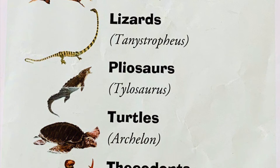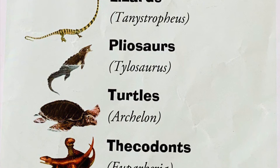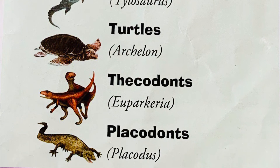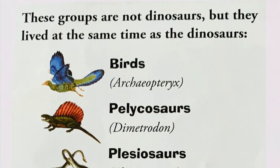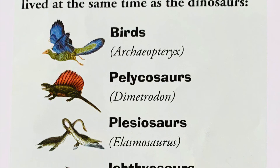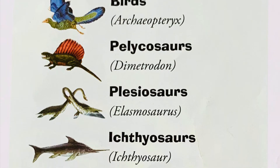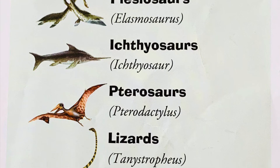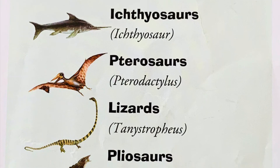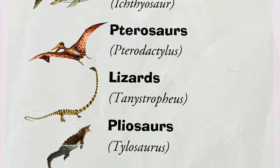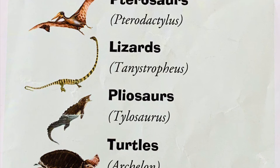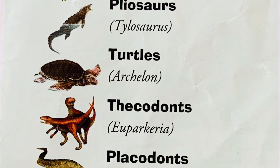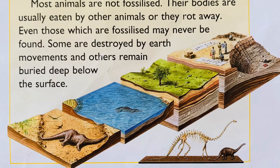In the sea were plesiosaurs, ichthyosaurs, and placodonts, as well as turtles, which have survived to modern times. On the land were thecodont and pelicosaur reptiles, as well as lizards and a small number of mammals.